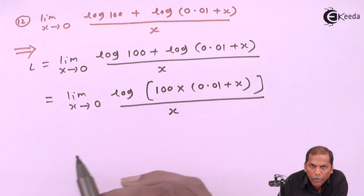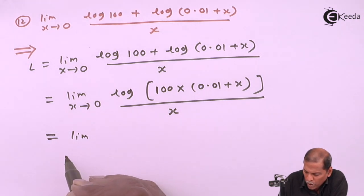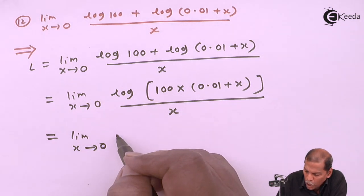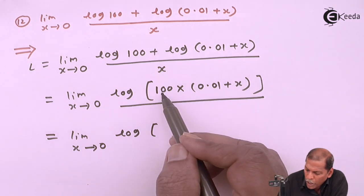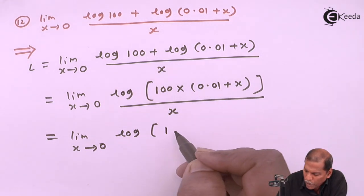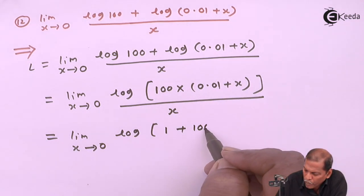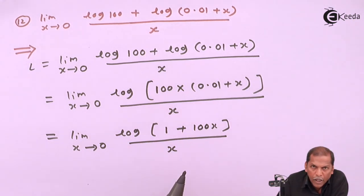That equals limit as x tends to 0 of log(1 + 100x) divided by x. Now 100 multiply by 0.01 gives 1, plus 100 multiply by x gives 100x, totally divided by x.